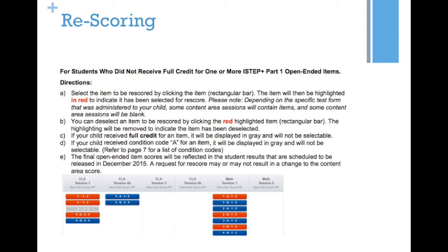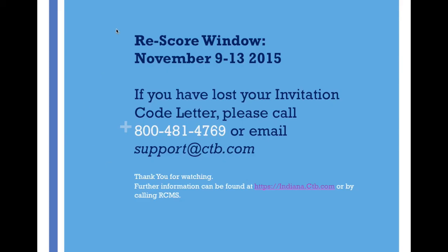The final open-ended item scores will be reflected in the student results that are scheduled to be released in December of 2015. A request for a re-score may or may not result in a change to the content area scores — they may stay the same or they may increase if you request them to be re-scored, but they will not go down. You can only request a re-score from November 9th to November 13th, so here's that re-score window.